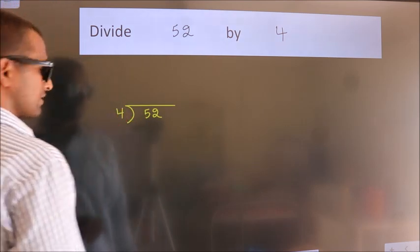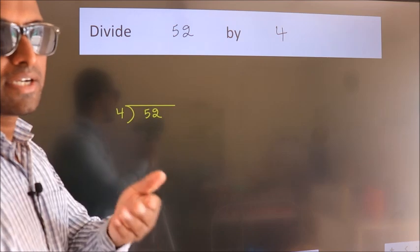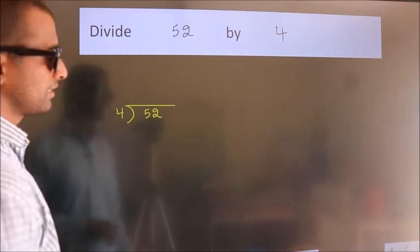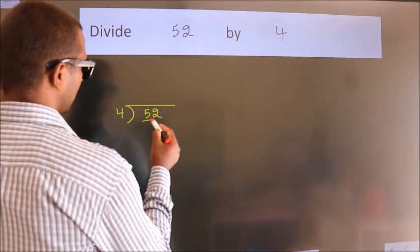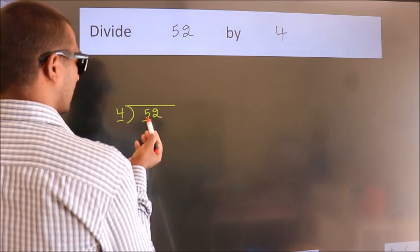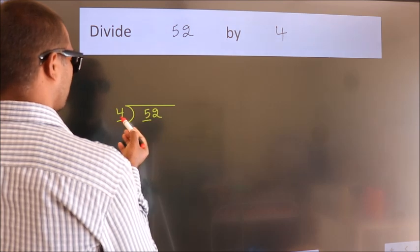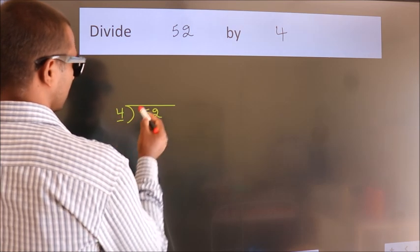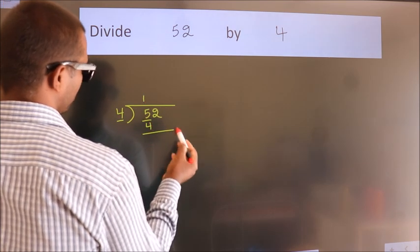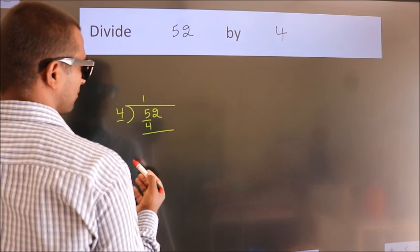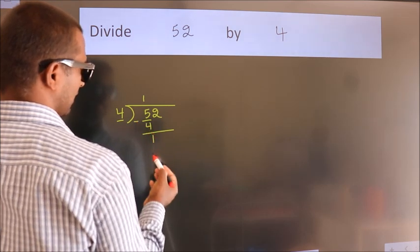This is your step 1. Next, here we have 5, here 4. A number close to 5 in the 4 table is 4 once, which is 4. Now we should subtract. We get 1.